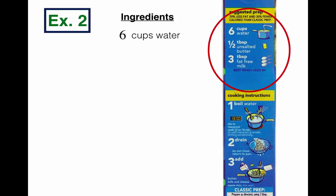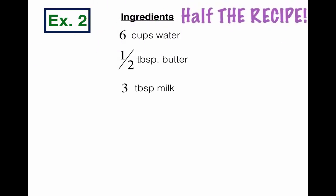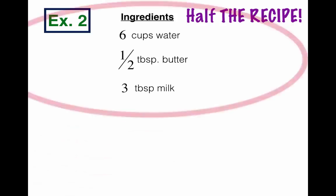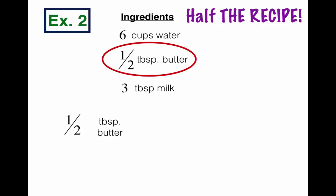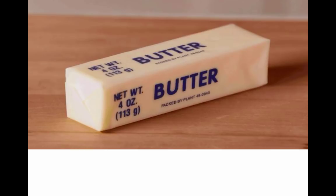The ingredients are six cups of water to boil it in, a half tablespoon of butter — TBSP stands for tablespoon — and three tablespoons of milk. That's the main ingredients for mac and cheese. What we're going to do is cut the recipe in half — we only need a small batch today. So let's focus on the butter: a half a tablespoon of butter makes one package of mac and cheese. But we are cutting everything in half, which means dividing by two — the butter and the package.